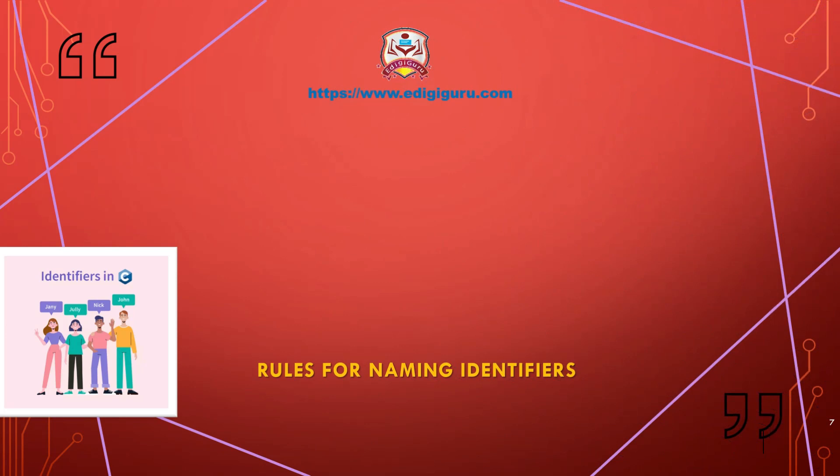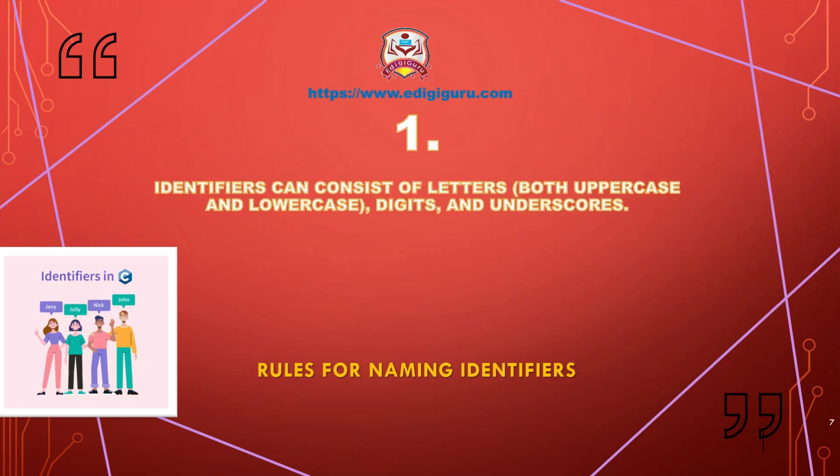The first rule says that identifiers can consist of letters, digits, and underscores. Letters can be both uppercase or lowercase.